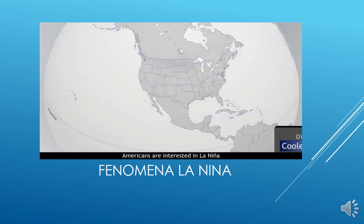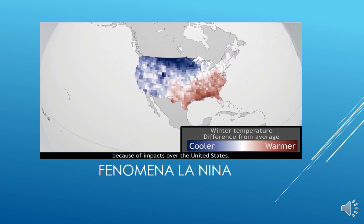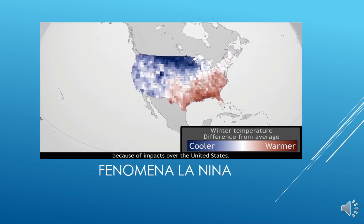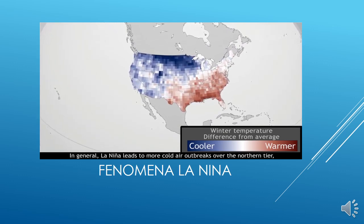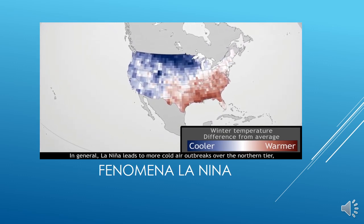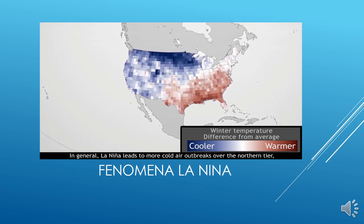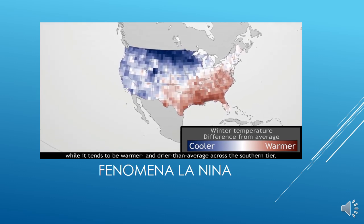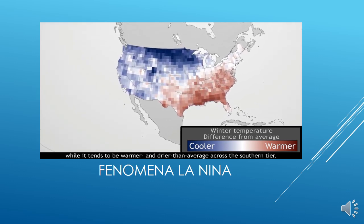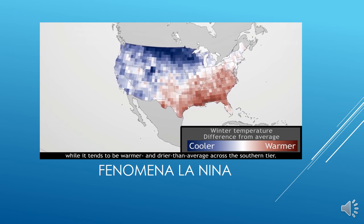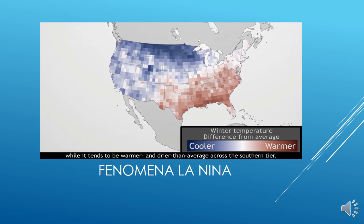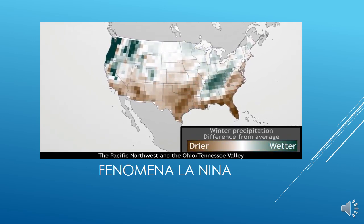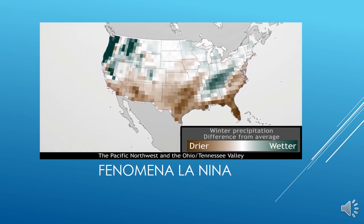Americans are interested in La Niña because of impacts over the United States. In general, La Niña leads to more cold air outbreaks over the northern tier, while it tends to be warmer and drier than average across the southern tier. The Pacific Northwest and the Ohio valley region are also affected.